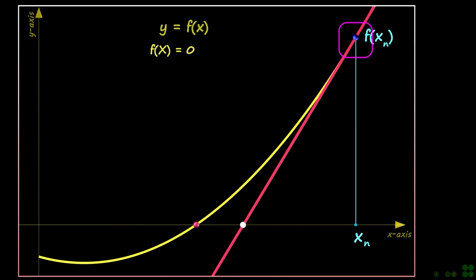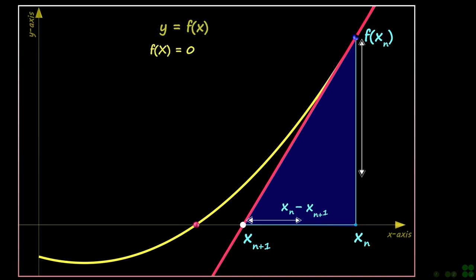Let's choose a point on the curve, say f of xn, and draw a tangent line at that point. This tangent line crosses the x-axis at a certain x value, let's call it xn plus 1.